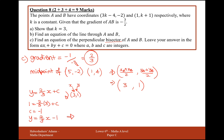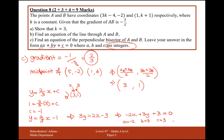However, the question wants the answer in the form ax + by + c = 0, where a, b, and c must be integers. So multiply through by 3: 3y = 2x - 3. Moving terms over gives -2x + 3y + 3 = 0. So here a represents minus 2, b represents 3, and c represents 3.